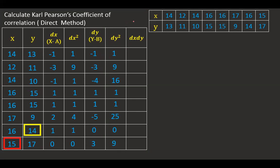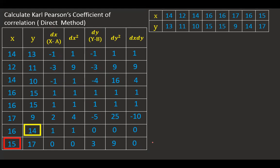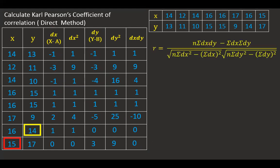Now I multiply the dx and dy columns together: 1×1=1, 3×3=9, 1×4=4 (note the signs carefully), 1×1=1, 1×1=1, 0 into -5 gives 0 (noting sign), 1×0=0, 0×3=0. Then I total all columns — the dx column, dx² column, dy column, dy² column, and the dx·dy column — which I will substitute into the formula.